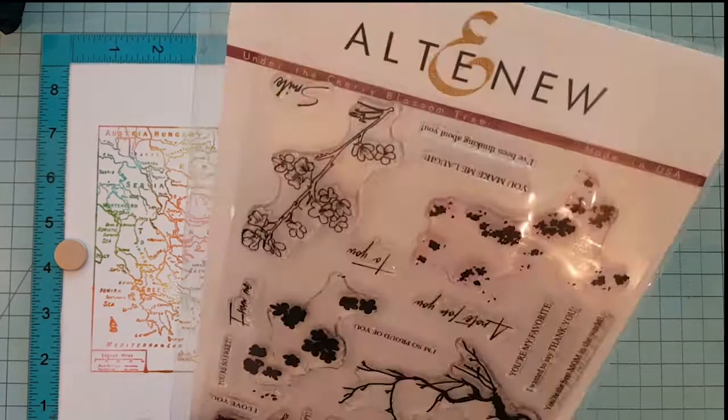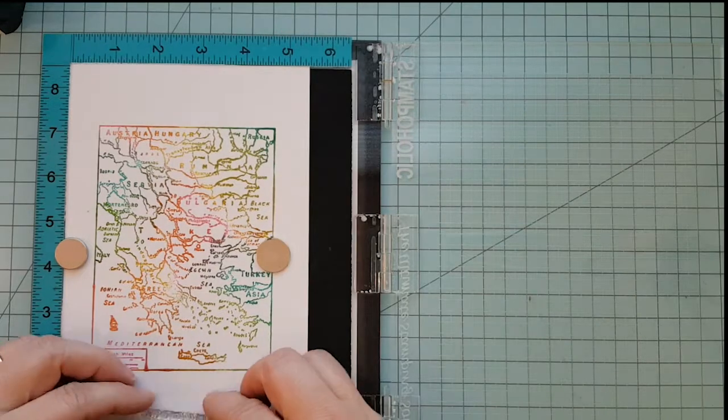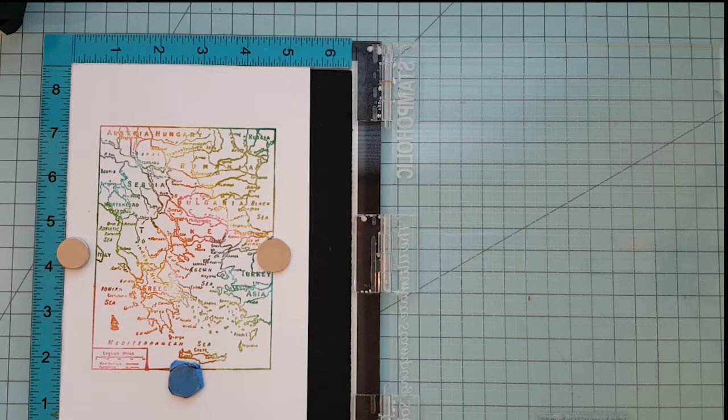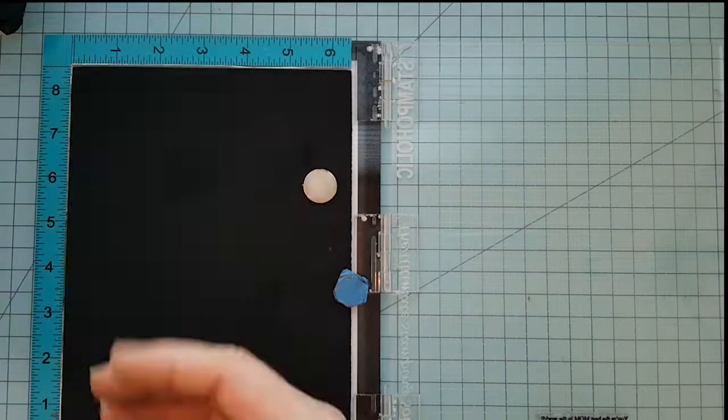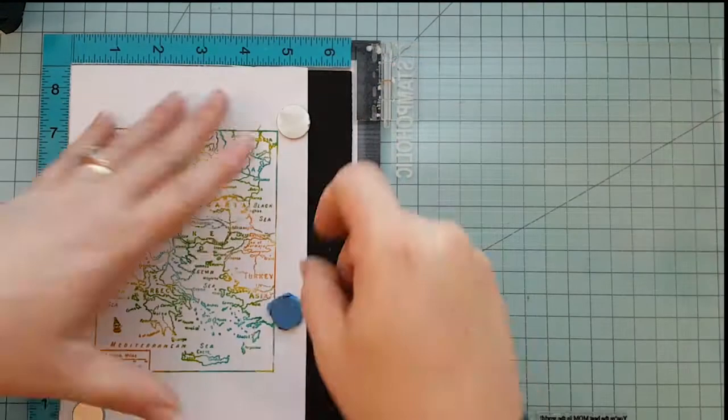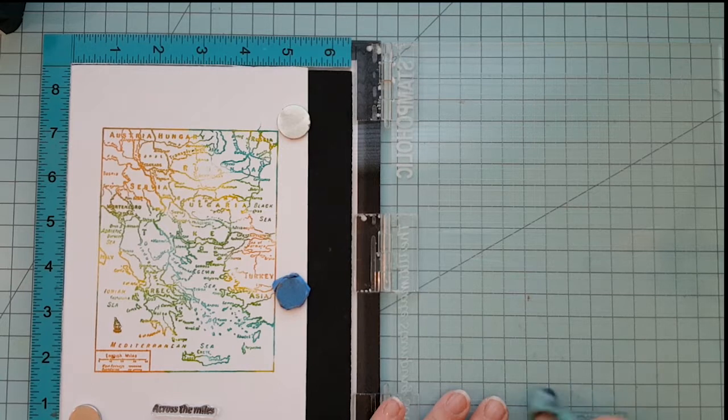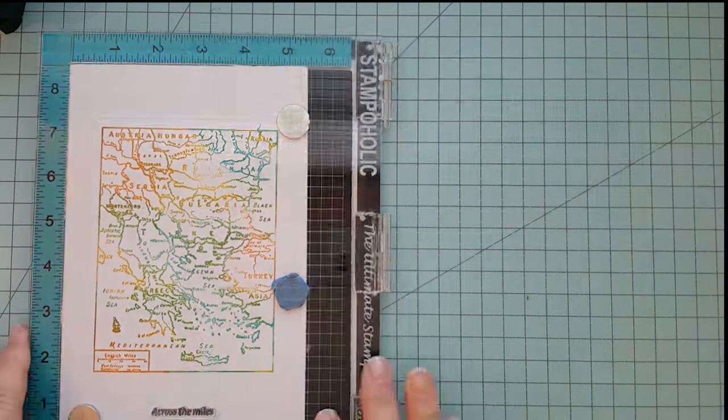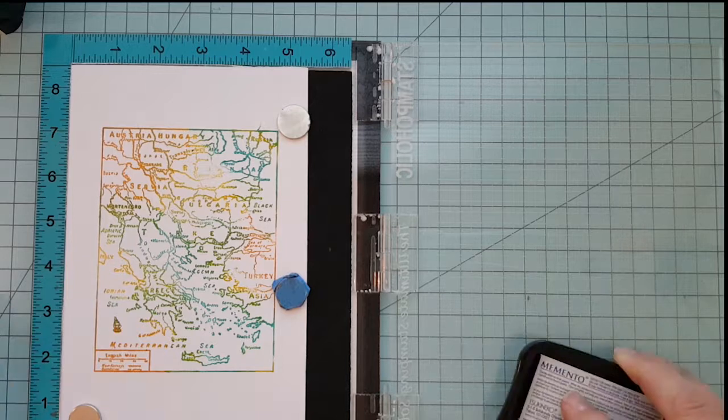I'm going to go ahead and stamp my sentiments right beneath these, and I'm going to use this sentiment from Altenew called You're the Best Mom in the World, which is, I think, perfect for this stamp. And we used some VersaFine Onyx Black ink on that. And then we're going to use a stamp sentiment across the miles. And we're using Memento ink in Espresso Truffle.